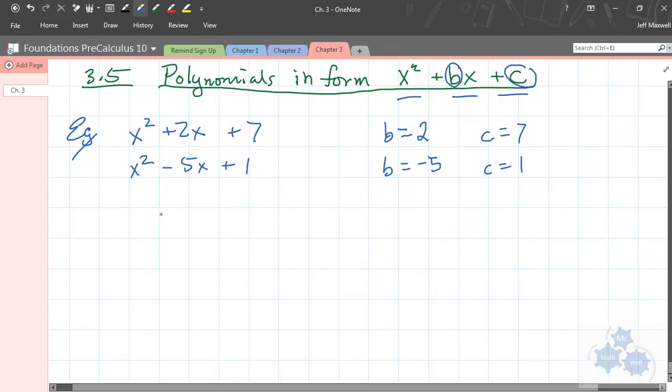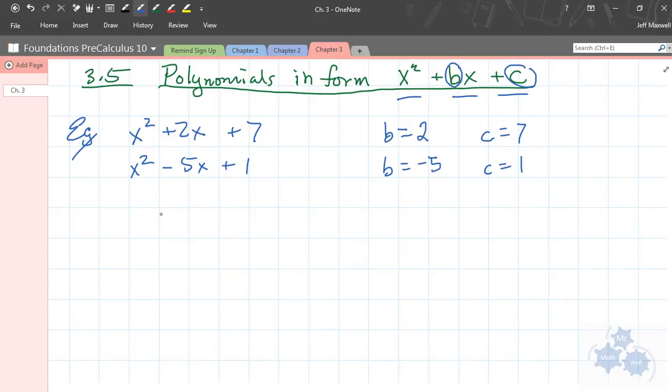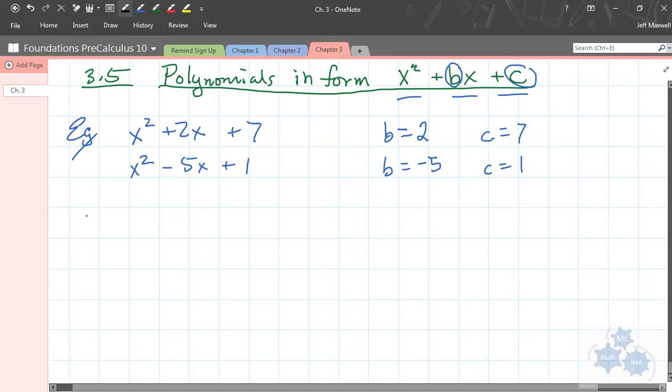Now, I want to take you back to expanding. Last section, we talked about factoring, and then checking by expanding. So, I want to talk to you a little bit about how expanding works. If I have 5A and I multiply that by B plus 2.